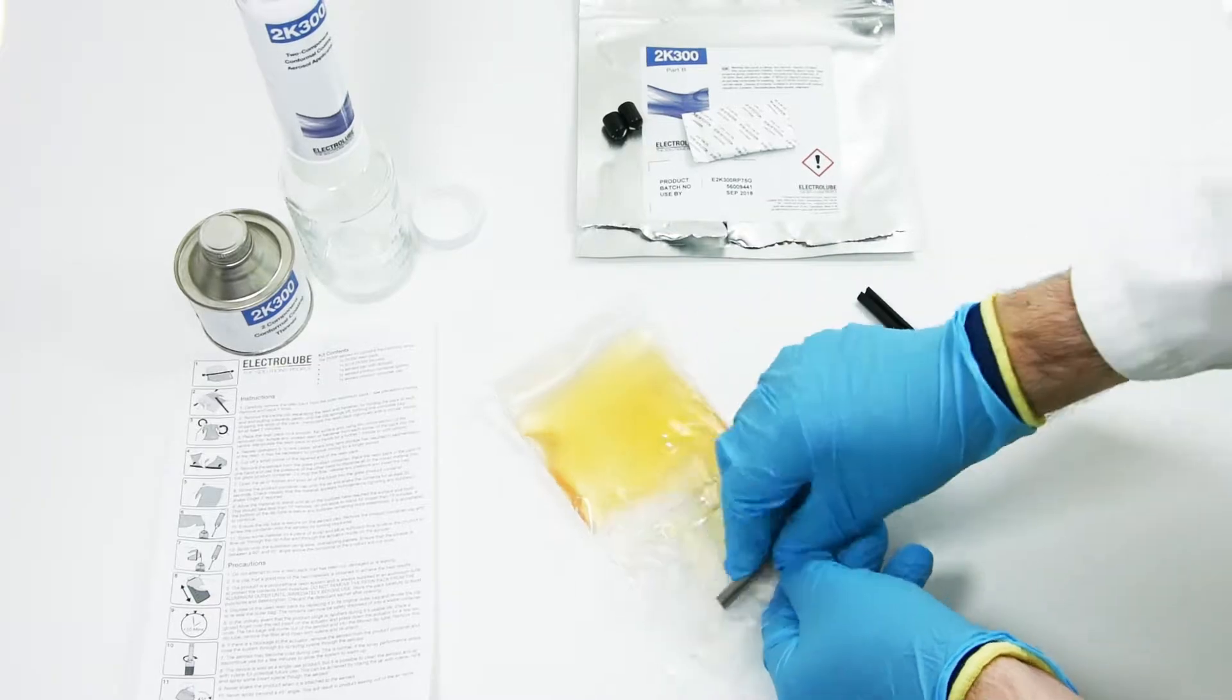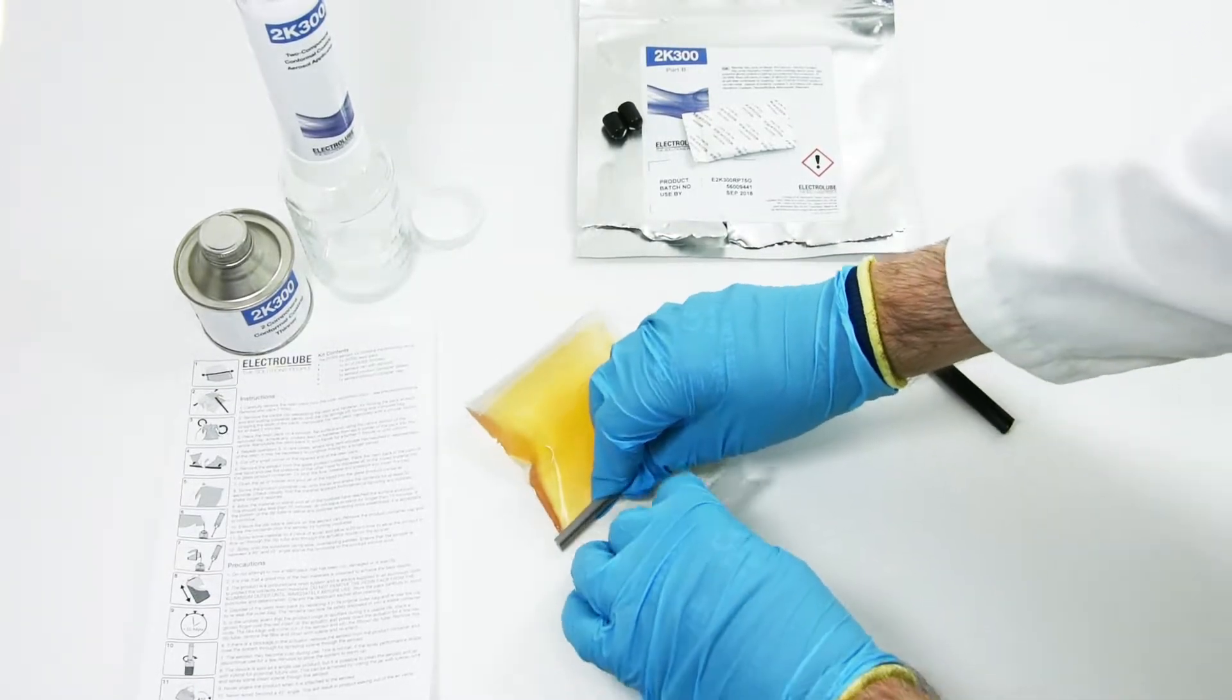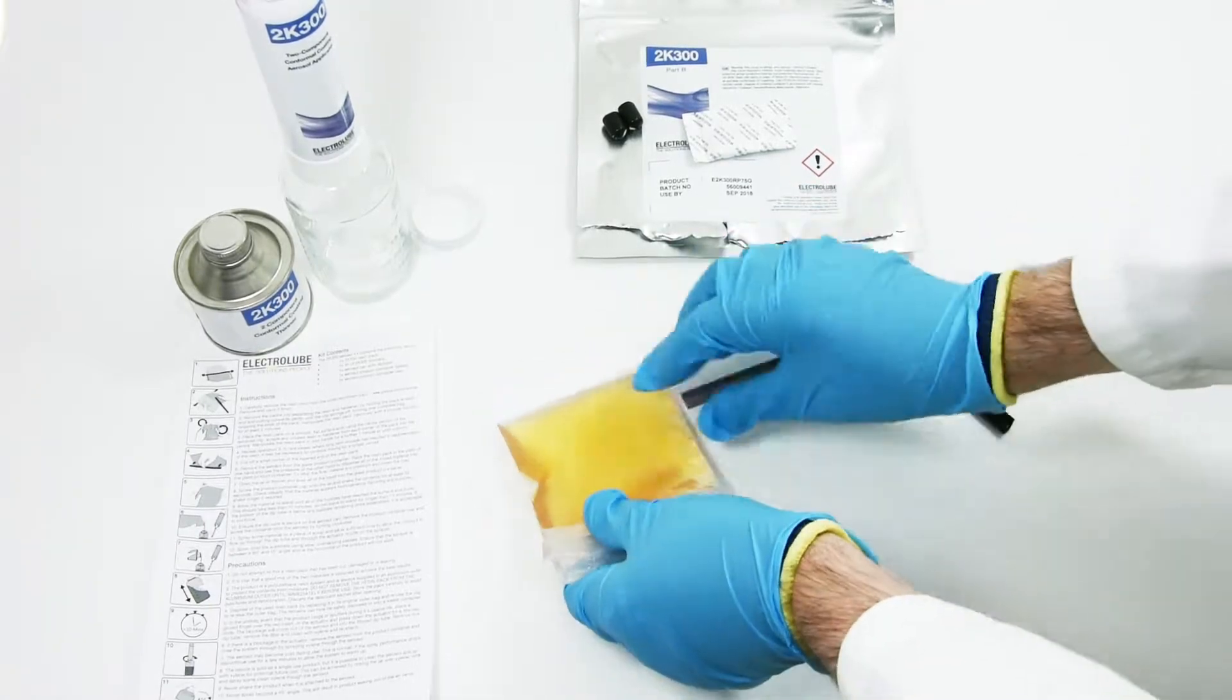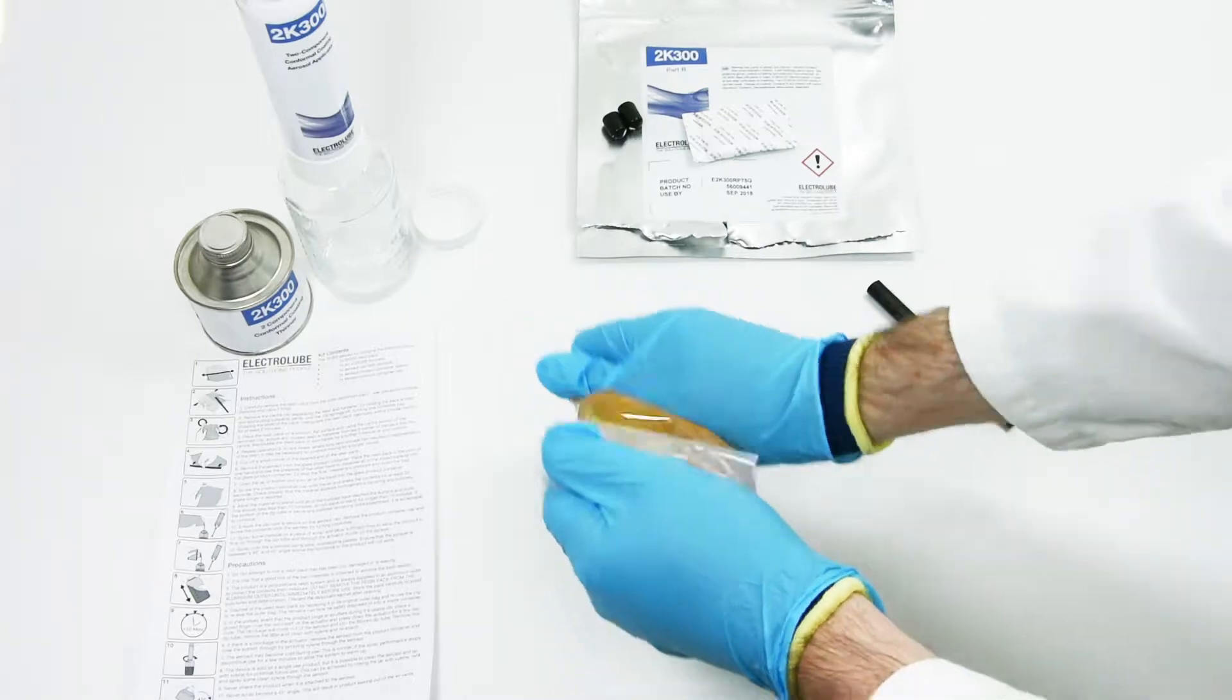Place the resin pack on a smooth, flat surface and, using the center section of the removed clip, scrape any unused resin or hardener from each corner of the pack into the center.